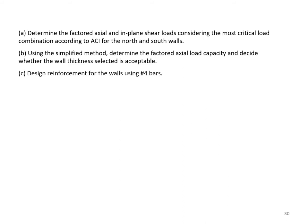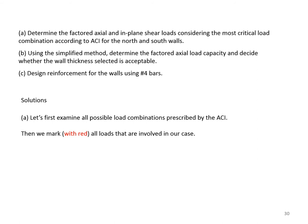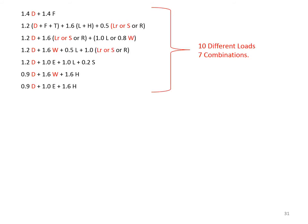We also want to design reinforcement using #4 bars. First, we examine all possible load combinations prescribed by ACI. We mark with red all loads relevant to our case. There are 10 different loads and seven combinations in general, but only four combinations are prevalent in our example.